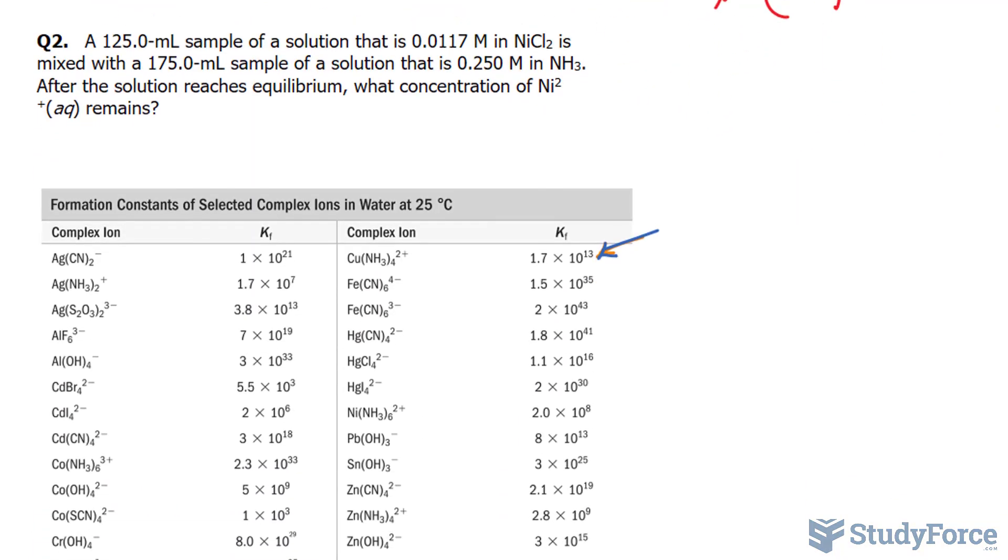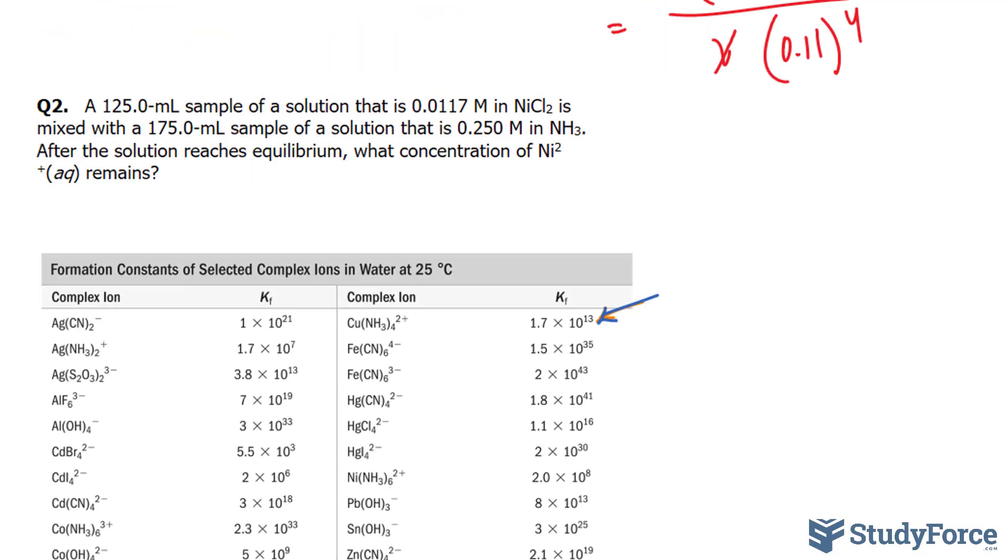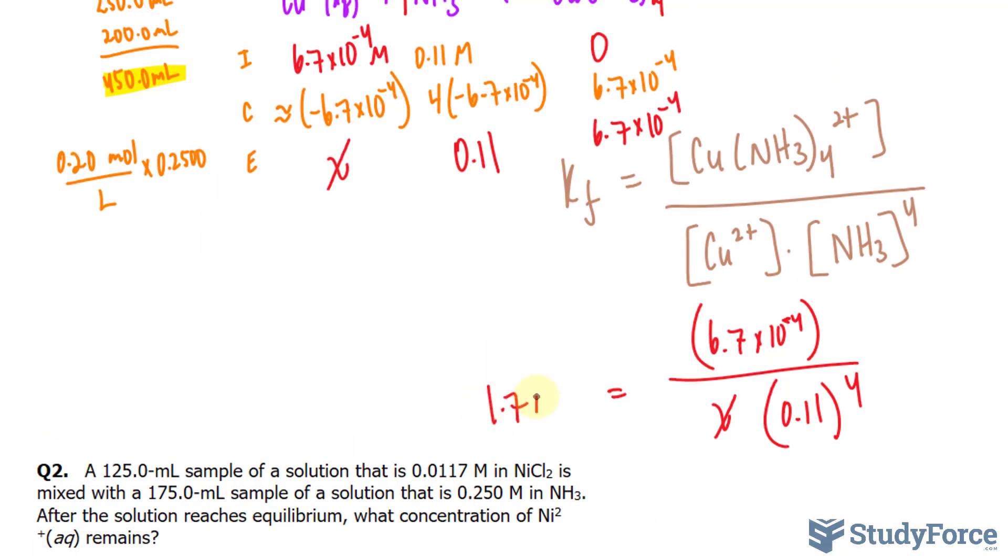I need to solve for X, so mathematically I'll multiply both sides by X times 0.11 raised to the power of 4. That cancels that out, and now it's on this side.